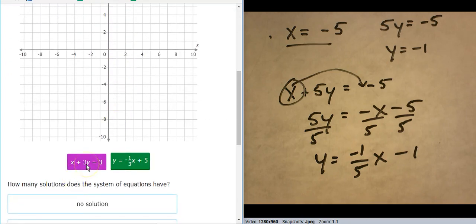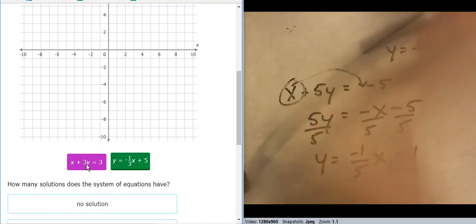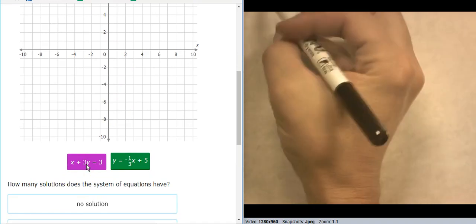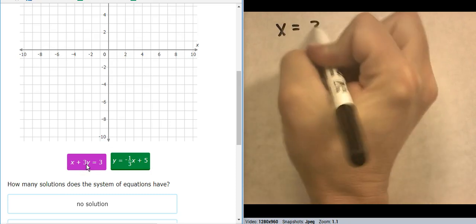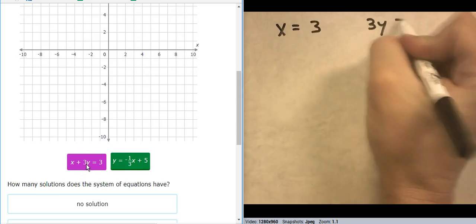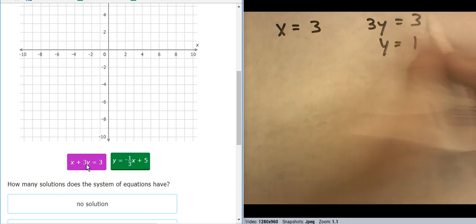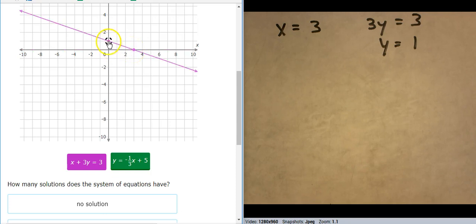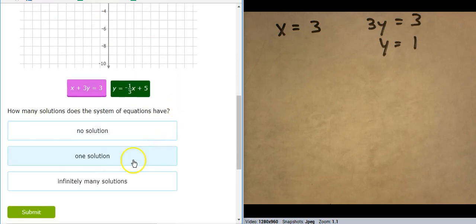All right. So this one is in standard form. Once again, I have options. I'm going to go into mini-equations, which is going to be x equals three, and three y equals three. So y equals one. X equals three. And y equals one. And this one's in slope-intercept, so that's nicer. That starts at five and goes down one over three. And those look like parallel lines, which means no solution.